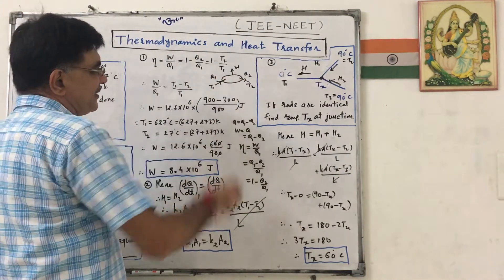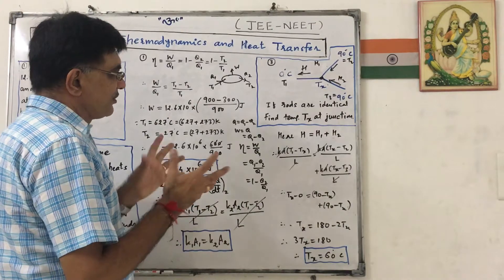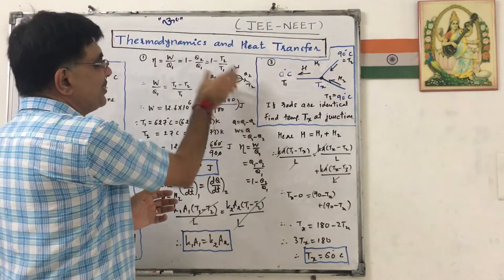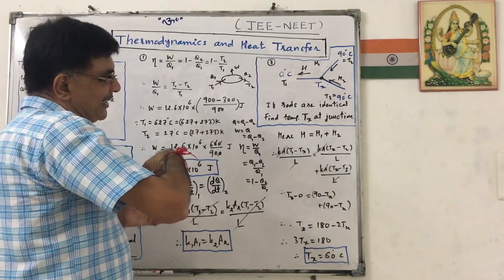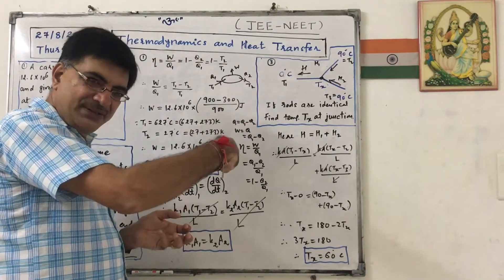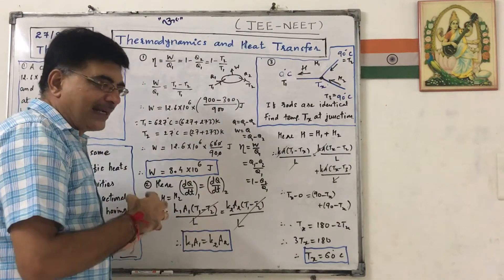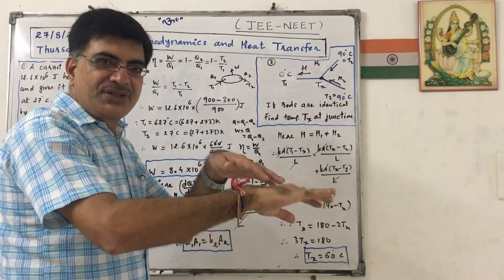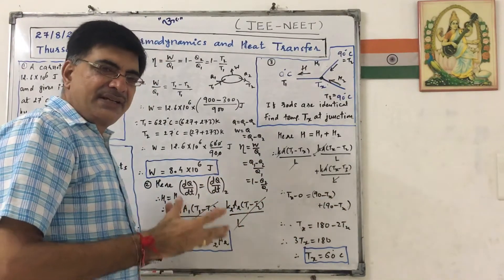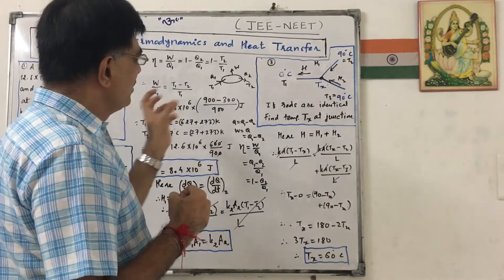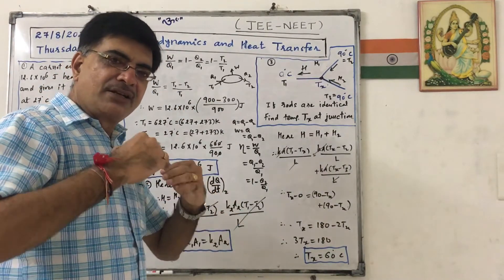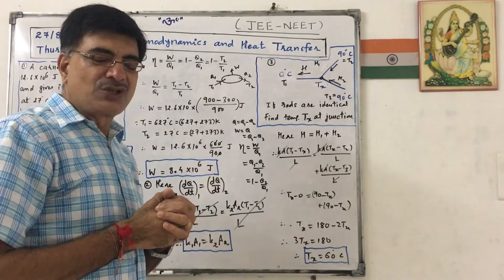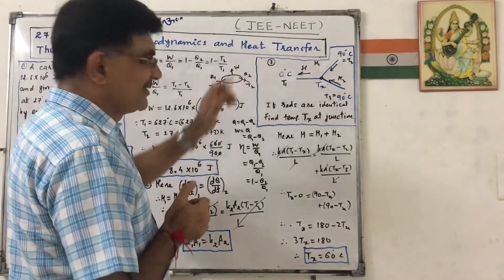I would try to explain you how Carnot engine works in this simple figure. Suppose this is an engine. It takes a heat Q1 from source or reservoir at temperature T1 and gives heat Q2 to sink at lower temperature T2. And the net heat absorbed is Q1 minus Q2 by the engine and that will be directly converted into work because we know that we have assumed everything ideal. In case of Carnot engine, so that is work.